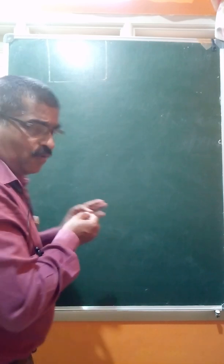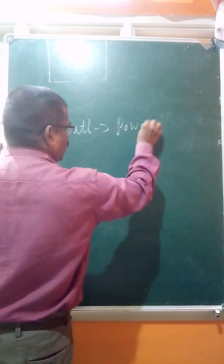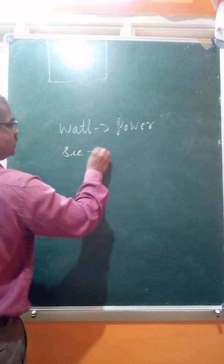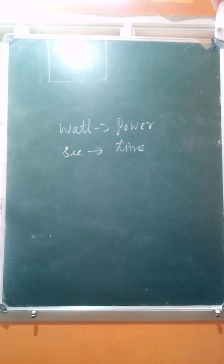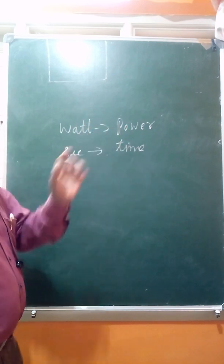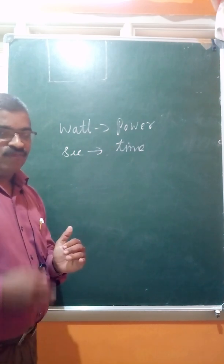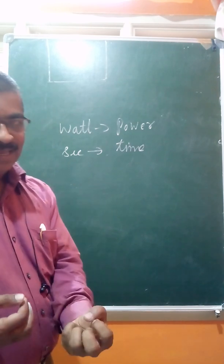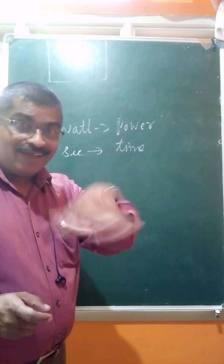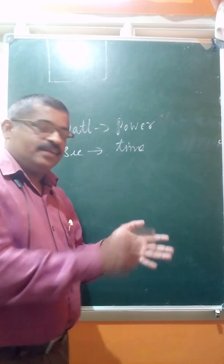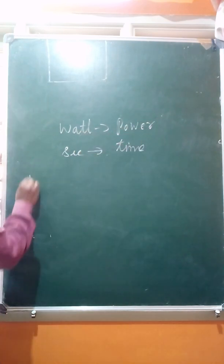Watt is the unit of power and second is the unit of time, but both are very small units. For commercial purposes, such as calculating your electricity bill, we need bigger units. So instead of Watt, we use Kilowatt. One Kilowatt is equal to one thousand Watts.